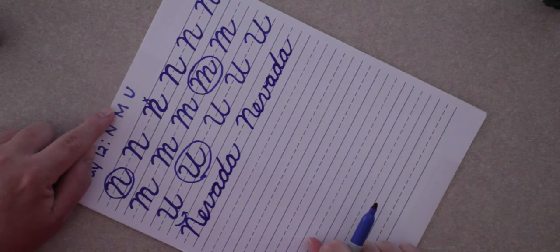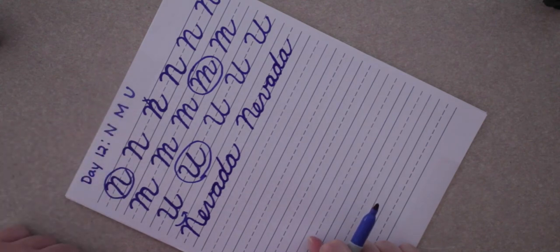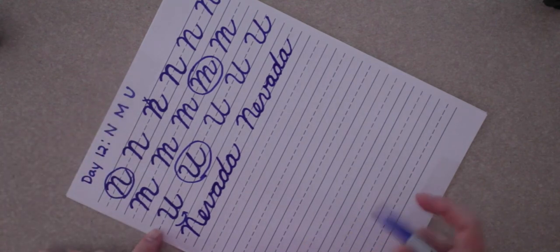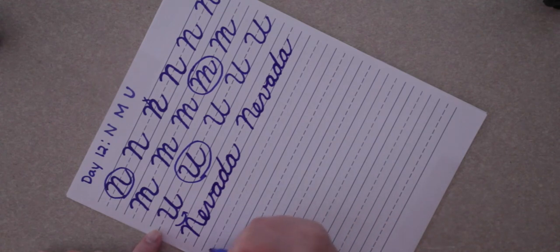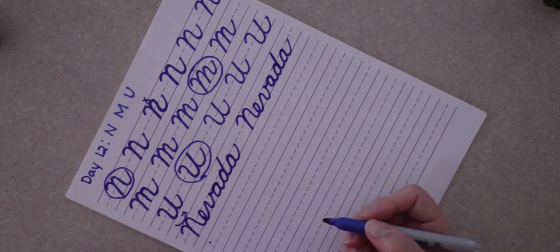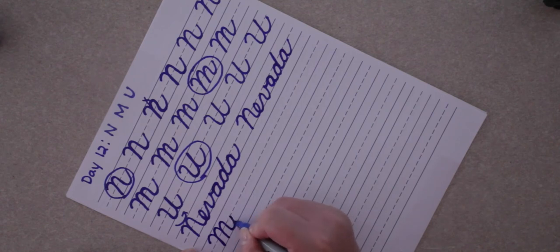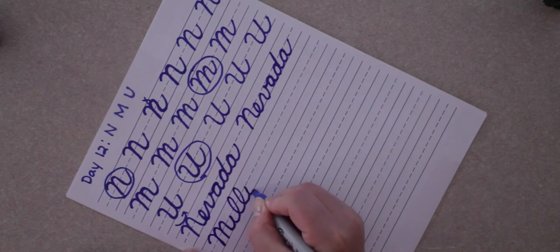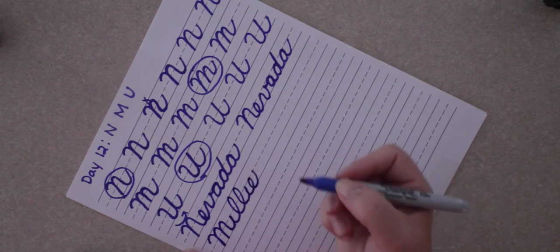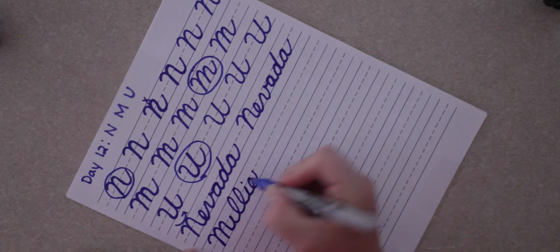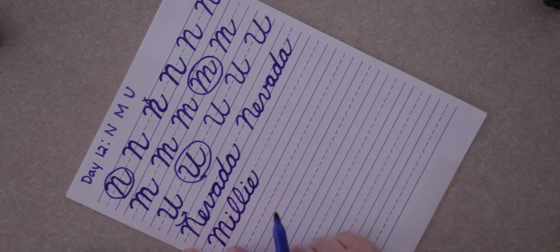Now we'll practice something with M. We have somebody in our class named Millie, so we can write her name. Here's how you write your name in cursive. I think you already know how to do it though. You're going to start a little bit below that top line. Trace that back up and make your M. Then the tail of your M is going to become your I. Then you have two L's, an I, and an E. Then when you're finished, you pick up your pencil and dot both of your I's. Millie.